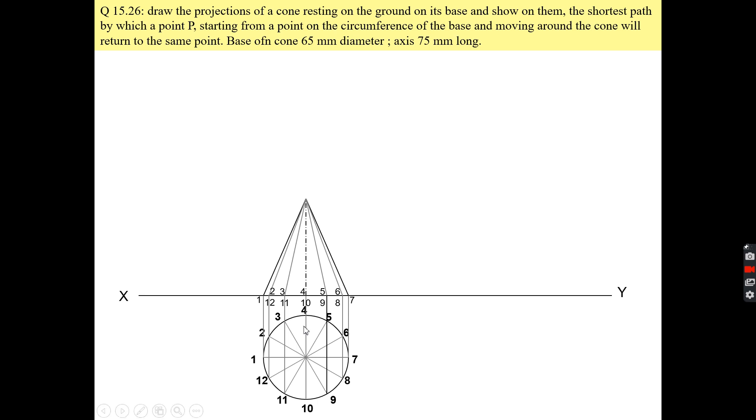I am making the development of the cone. I will draw a sector of a circle and divide this sector into 12 equal parts. This is point 1, point 2, up to point 12, and again 12 to 1. So this is your development of the cone.